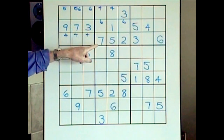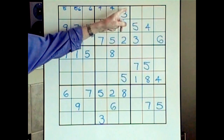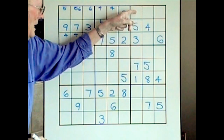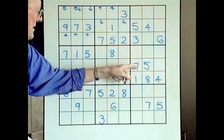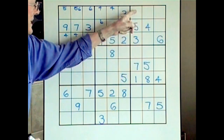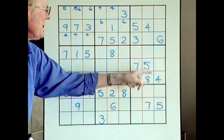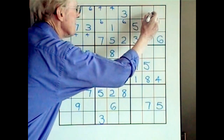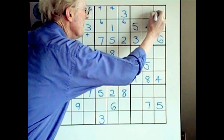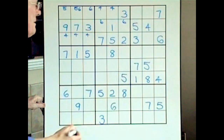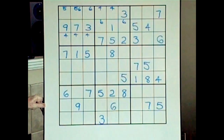Sevens — there's a seven here and a seven here, so the seven has to go in this block up on the top level. But there's a seven there as well, so that cancels that one out. This seven cancels that one out, so this becomes a seven. Are there any ramifications? Not really.